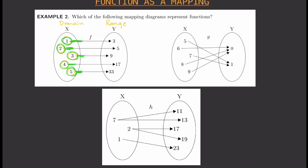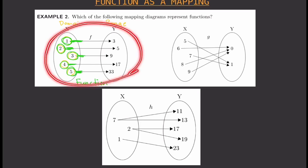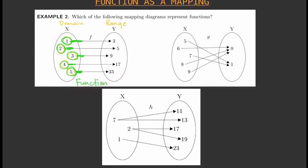In this first example, you can see that there is only one line connected to each number, which means this is a function. If we rewrite it as a set of ordered pairs, it would be: (1, 3), (2, 5), (3, 9), (4, 17), and so on. So just make sure that only one line connects to each number in the domain.